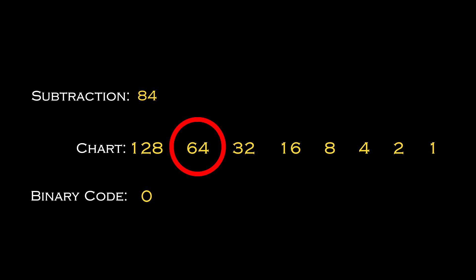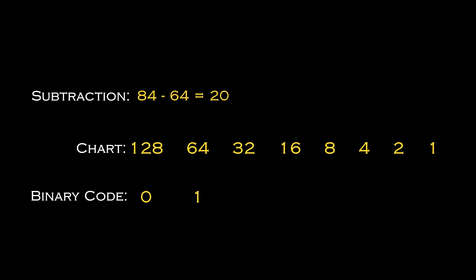This time, however, you can see that 64 is smaller than our number 84, so instead of putting a zero underneath, we'll put a 1 this time. In addition to this, we need to subtract 64 from 84, which will leave us with 20. Then repeat the process, but this time with your remaining 20 instead of the original 84.